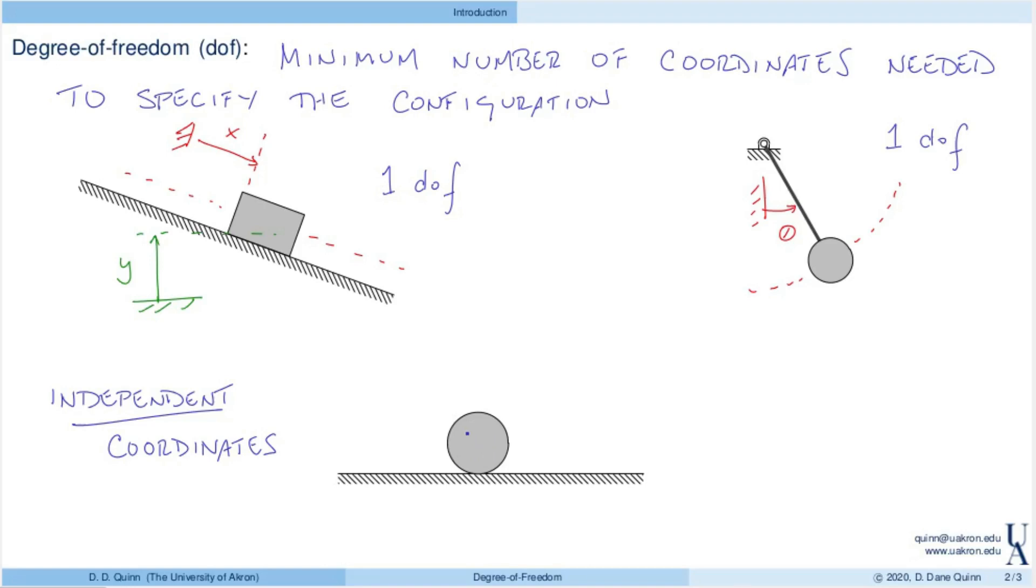Here if I take an example of a ball or a disc on a surface, I could actually define two coordinates. One of them might be the location of the center of the disc, we'll call that x, and then I could also define the rotation of this disc. Notice that I haven't said anything at all about how this disc rolls along the ground.